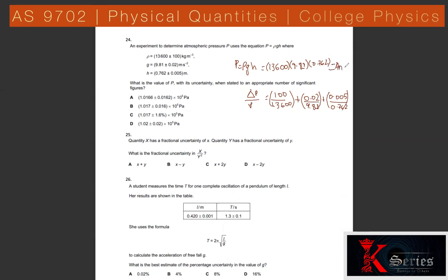Question 24: Atmospheric pressure p = ρgh, where ρ = 13600 kg/m³. All quantities have power 1. Fractional uncertainty = 100/13600 + 0.02/9.81 + 0.005/0.762. Multiply this total fractional uncertainty by the calculated value of p. The final answer, stated to three significant figures for both the value and uncertainty, is option D.